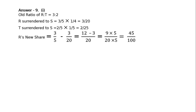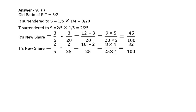R's new share is equal to 3/5 minus 3/20. LCM is 20: 4 threes are 12 minus 3, giving 9/20. Multiplied by 5/5, that is 45/100. T's new share: 2/5 minus 2/25, LCM 25: 10 minus 2 equals 8/25. To make every denominator equal to 100, multiply by 4/4, giving 32/100.